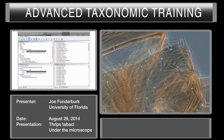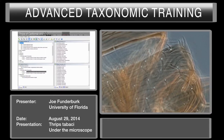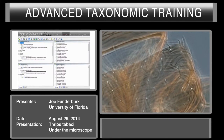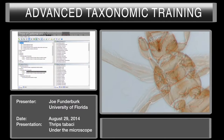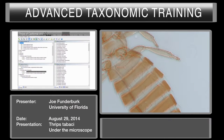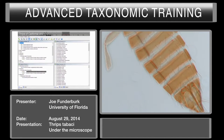Now we have 35 species remaining in the key. I'm going to choose the next best character to identify, and it's asking body color. I think it's quite obvious that it's uniformly brown. One has to be very careful with material that has been soaked and cleared, but this one is quite obviously uniformly brown.